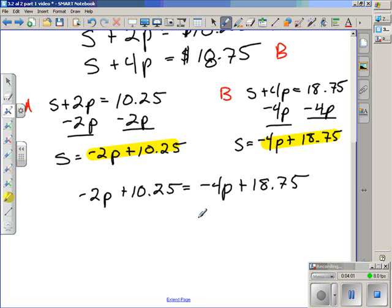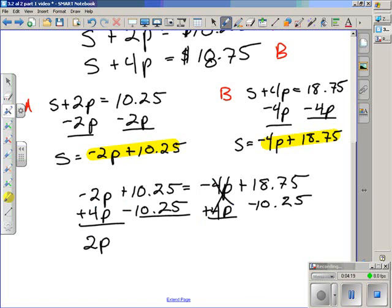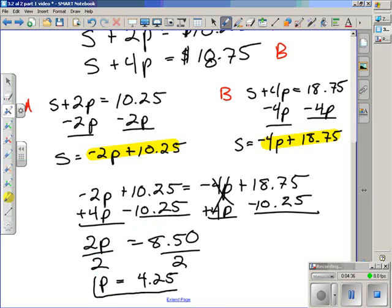Now we solve this equation. We can solve it by adding 4P to both sides, giving us 2P on the left, the 4P and the minus 4P on the right cancel. And at the same time, we can subtract $10.25 from both sides, which ultimately gives us $8.50. So we continue to solve, we divide each side by 2, and that leaves us with P is equal to $4.25. So the price of a soda is equal to $4.25.